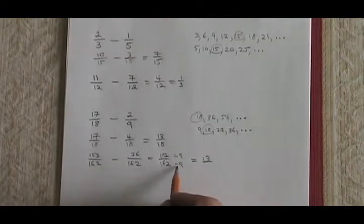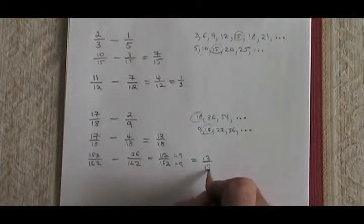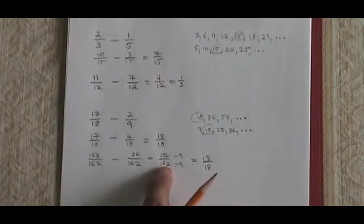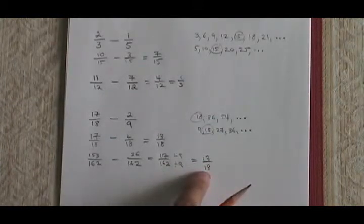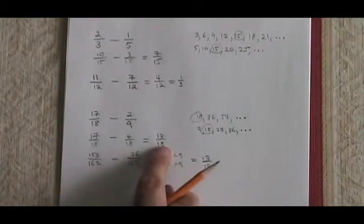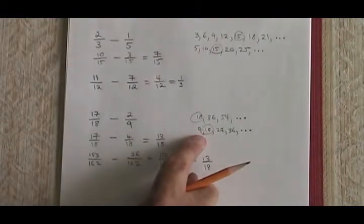117 divided by 9 is 13, and 162 divided by 9 is 18. So I have to reduce the fraction I got as my answer, and it turns out that I have 13-18, which is what I got when I used the more efficient lowest common denominator.